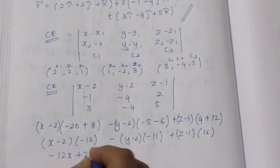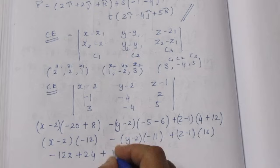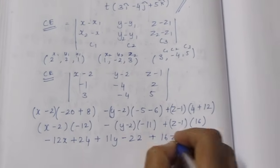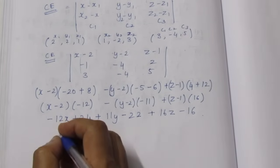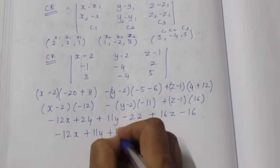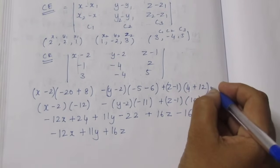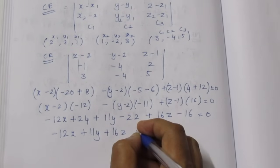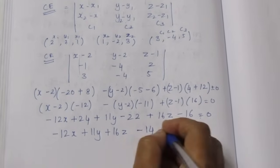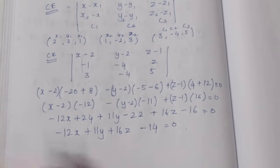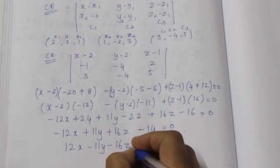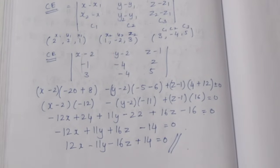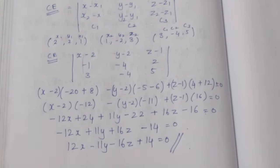Collecting like terms: minus 12x plus 11y plus 16z plus 24 minus 22 minus 16 equals 0, simplifying to minus 12x plus 11y plus 16z minus 14 equals 0. Multiplying through by minus 1: 12x minus 11y minus 16z plus 14 equals 0. This is the required Cartesian equation of the given plane.